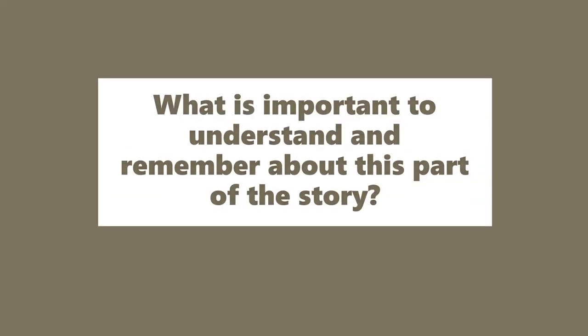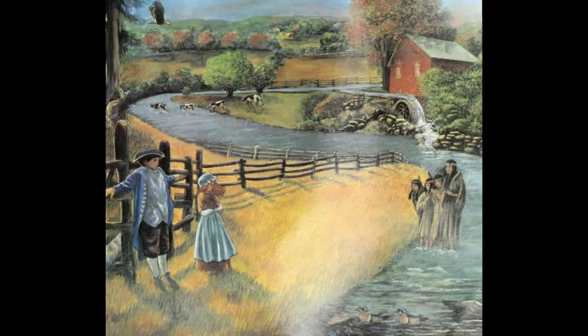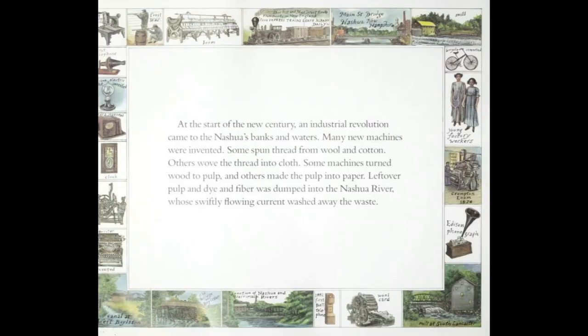We're going to start reading now. Remember to think about this question: What is important to understand and remember about this part of the story? At the start of the new century, an industrial revolution came. The industrial revolution was a period of change in which machines were used more and more to do the work previously done by hand.